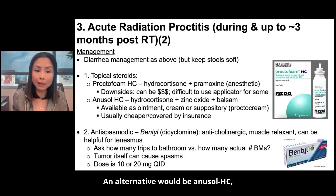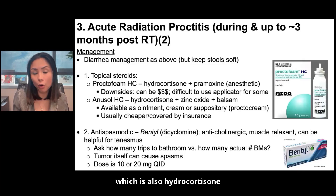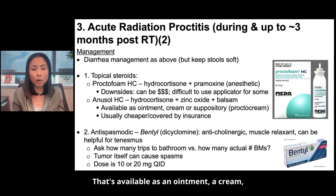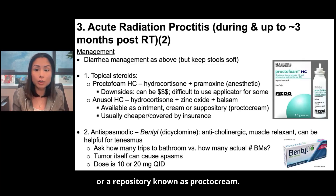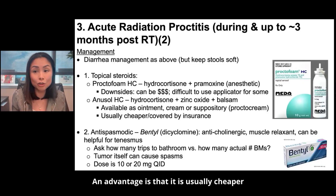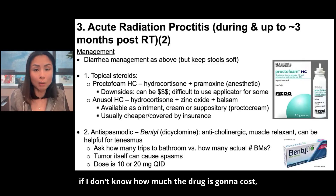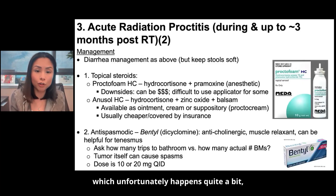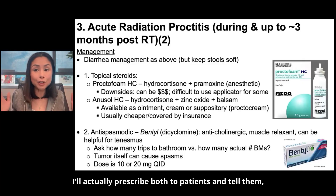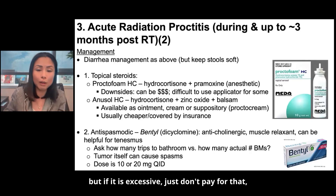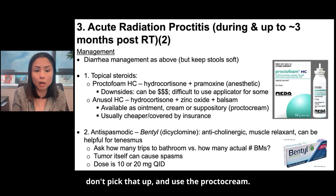An alternative would be Anusol-HC, which is also hydrocortisone with other additives — zinc oxide and balsam — available as an ointment, a cream, or a suppository known as Proctocream. An advantage is that it is usually cheaper and covered by insurance. Sometimes I'll prescribe both and tell patients to try the Proctofoam if the cost is appropriate, but if it is excessive, just use the Proctocream instead.